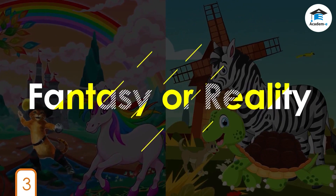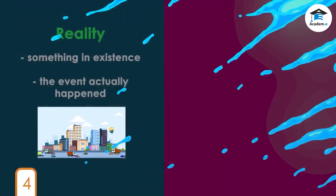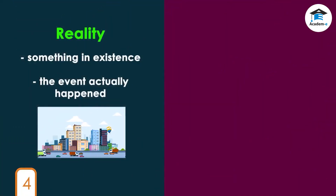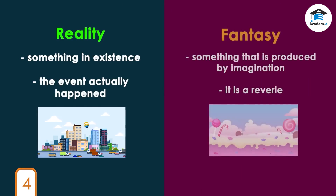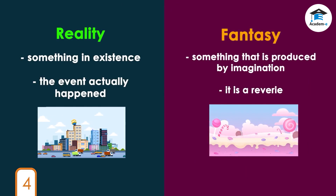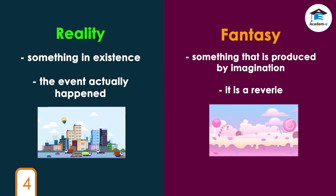Let's find out what fantasy and reality are. Merriam-Webster defines reality as something that actually exists or happens, meaning a real event, occurrence, or situation that actually happened, as opposed to fantasy, which is defined as something that is produced by the imagination. Fantasy is an idea about doing something that is far removed from normal reality.